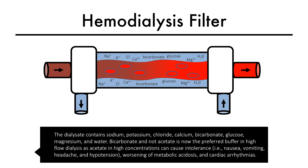Bicarbonate — and not acetate — is now the preferred buffer in high flow dialysis, as acetate in high concentrations can cause intolerance, that is, symptoms of nausea, vomiting, headache, and hypotension, as well as worsen metabolic acidosis and increase the risk of cardiac arrhythmias.